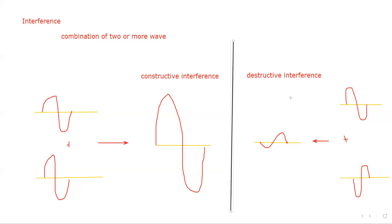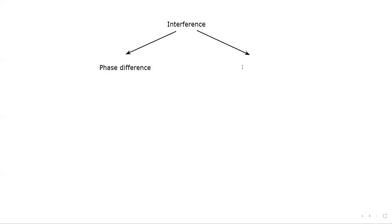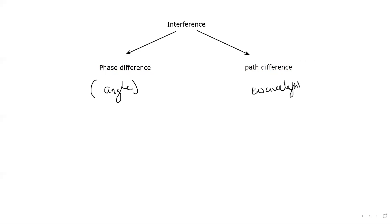To understand the conditions for constructive and destructive interference, we explain interference using two terminologies. We use the term phase difference — which means comparing the change in angle between waves — and we use the term path difference, which is when we compare their wavelength or distance. I will continue this explanation in another session and complete this discussion of interference.